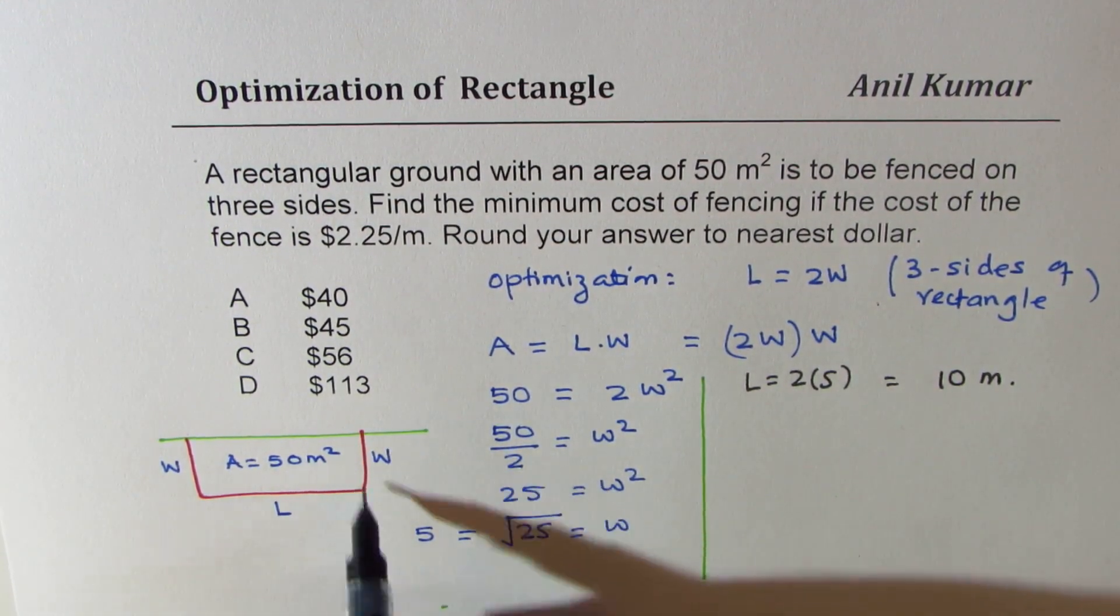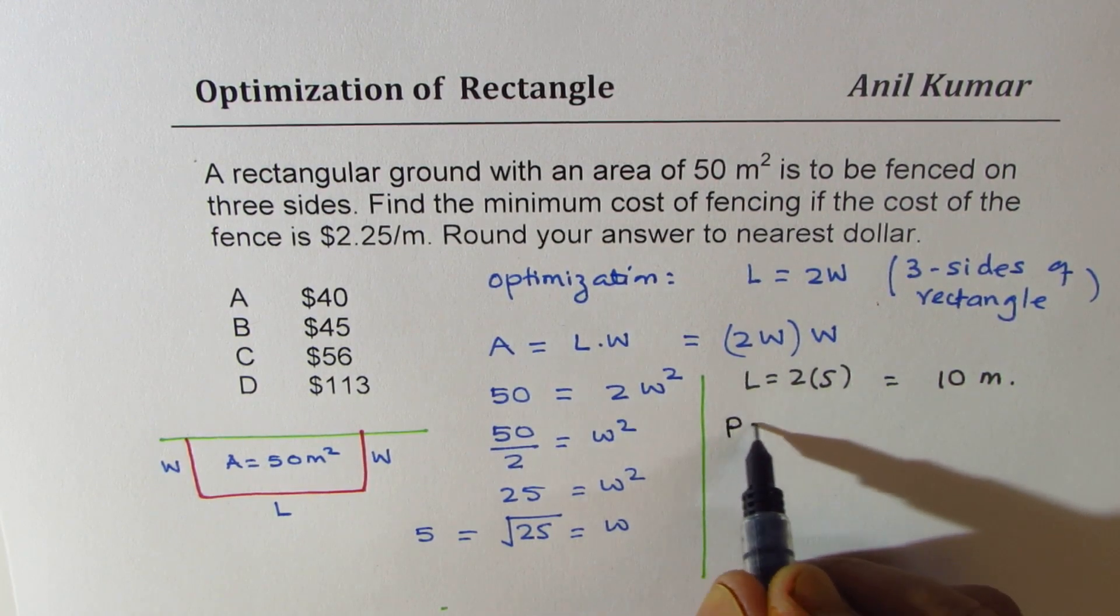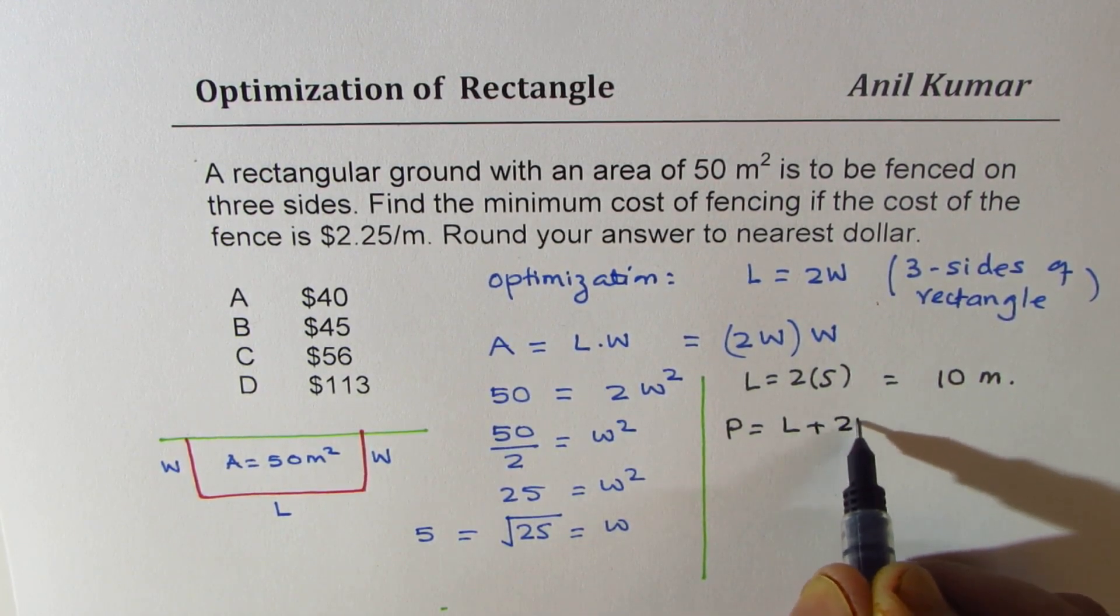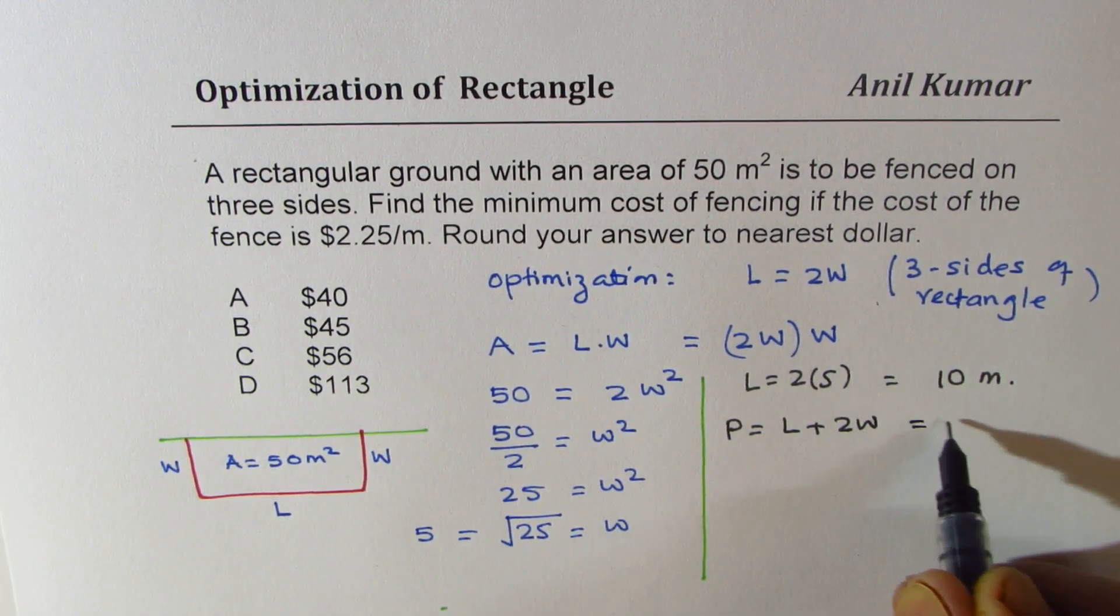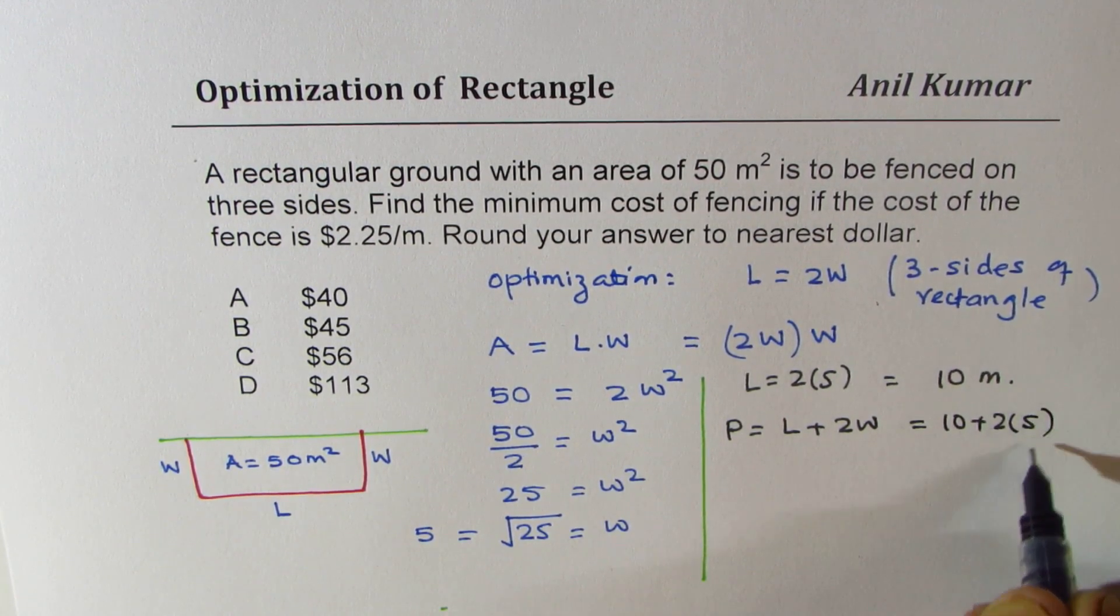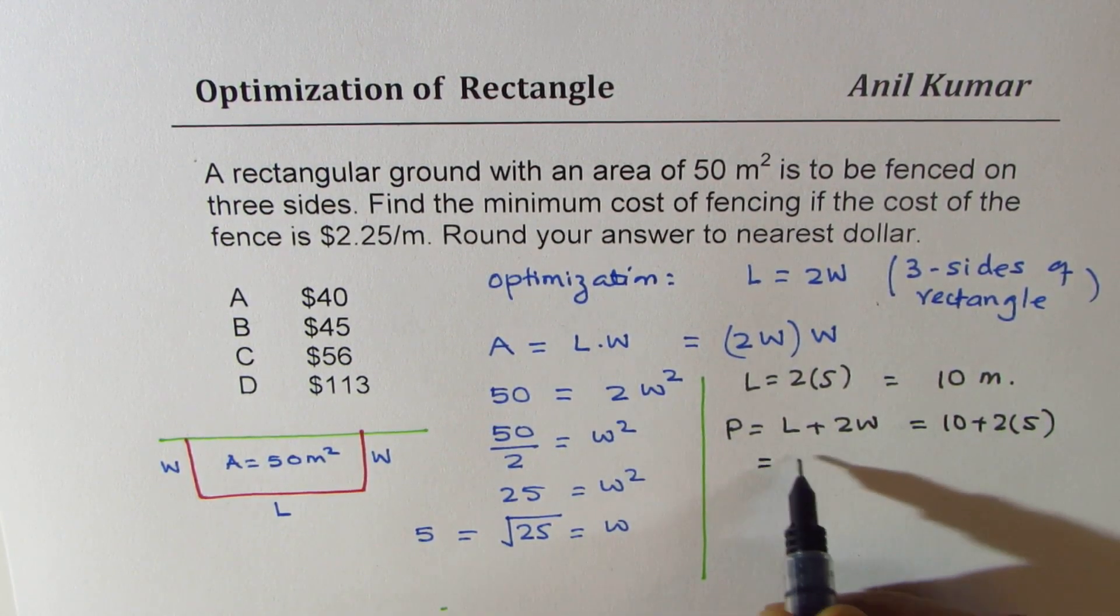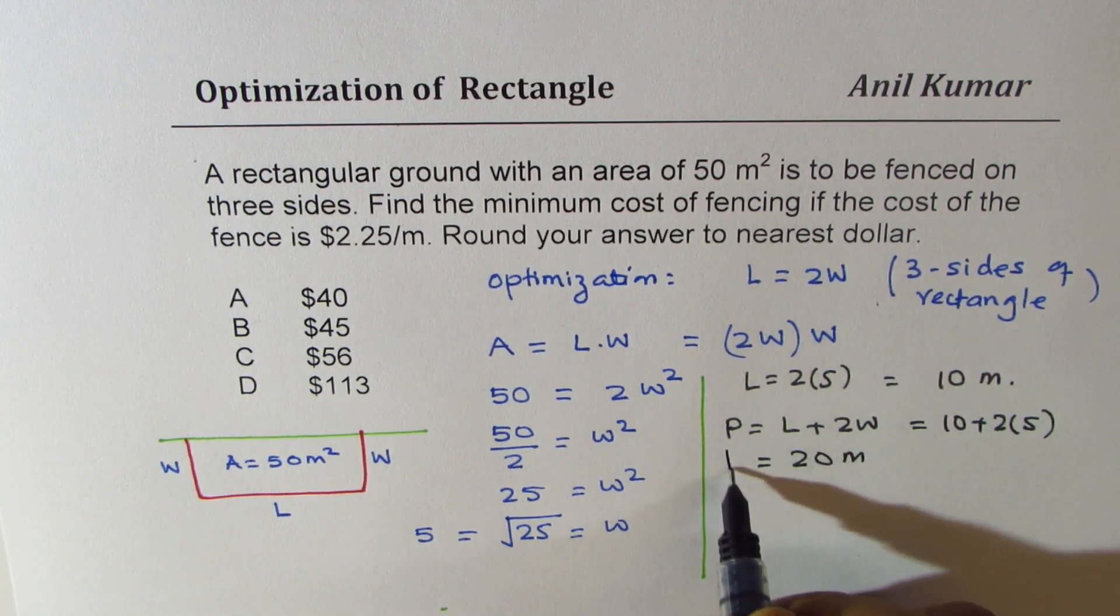Now, in that case, the perimeter will be how much? Perimeter is length plus two width, which is 10 plus two times five, which is 20. So we get 20 meters as the perimeter.